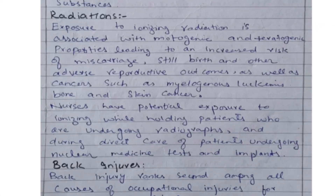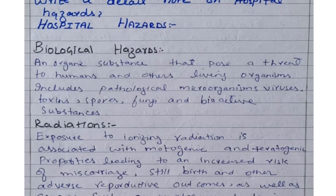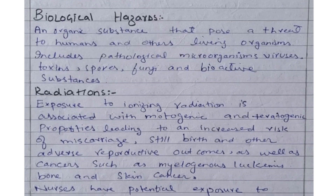Asalaam alaikum. Our topic is hospital hazards. Types of biological hazards: an organic substance that poses a threat to humans and other living organisms, including pathological microorganisms, viruses, toxins, spores, fungi, and bioactive substances.